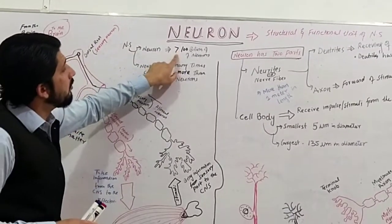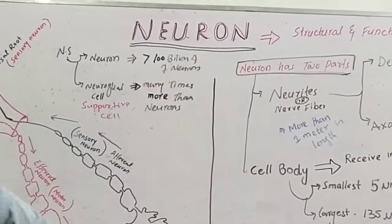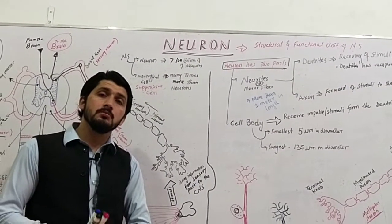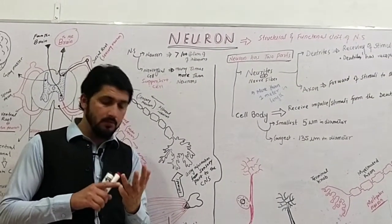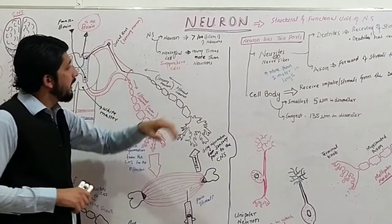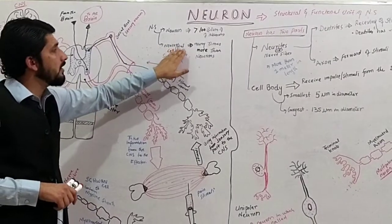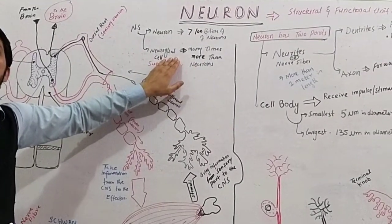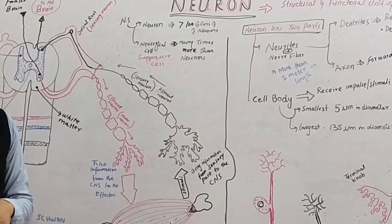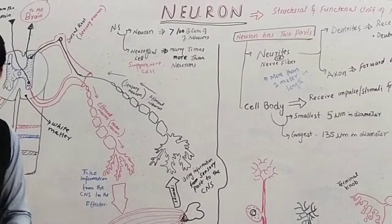More than 10 billion neurons form our nervous system. This nervous system has two main divisions: the central nervous system and the peripheral nervous system. Along with neurons, neuroglial cells are also present, which function as supporting cells of the nervous system.